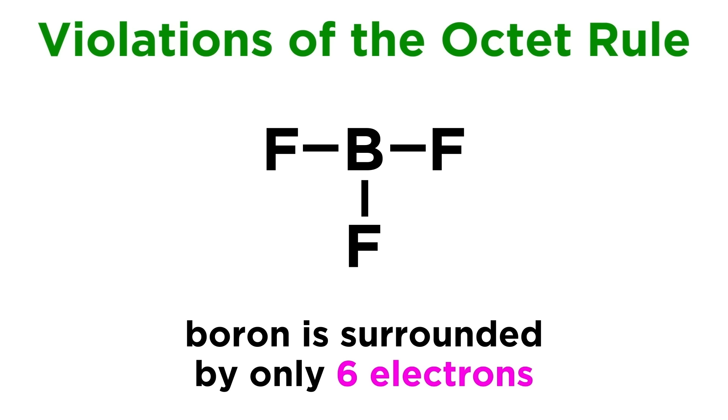In boron trifluoride, boron makes three bonds to fluorine, so it will have only six electrons around it rather than eight. This is a violation of the octet rule.